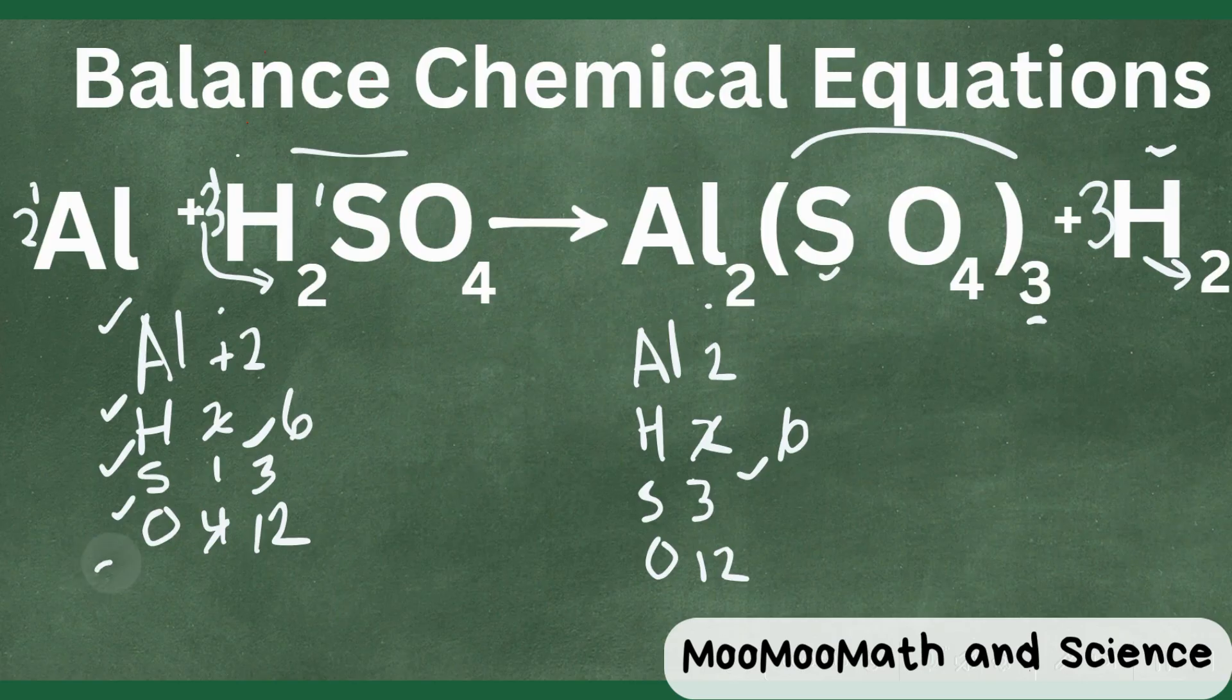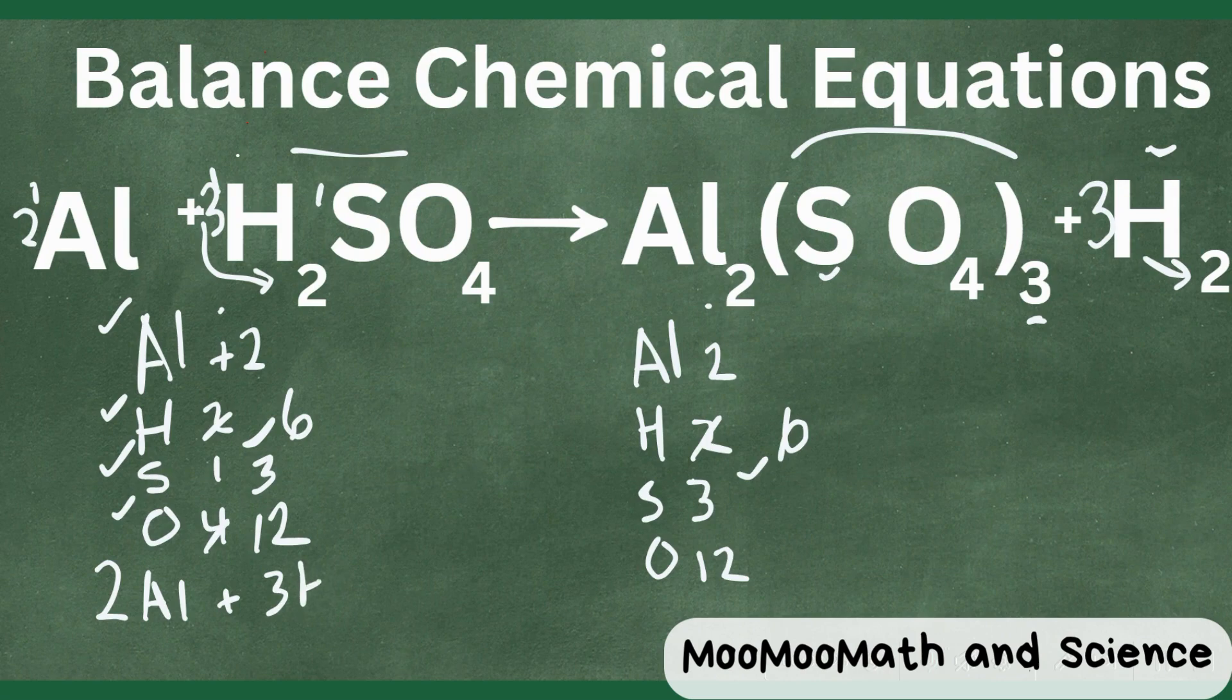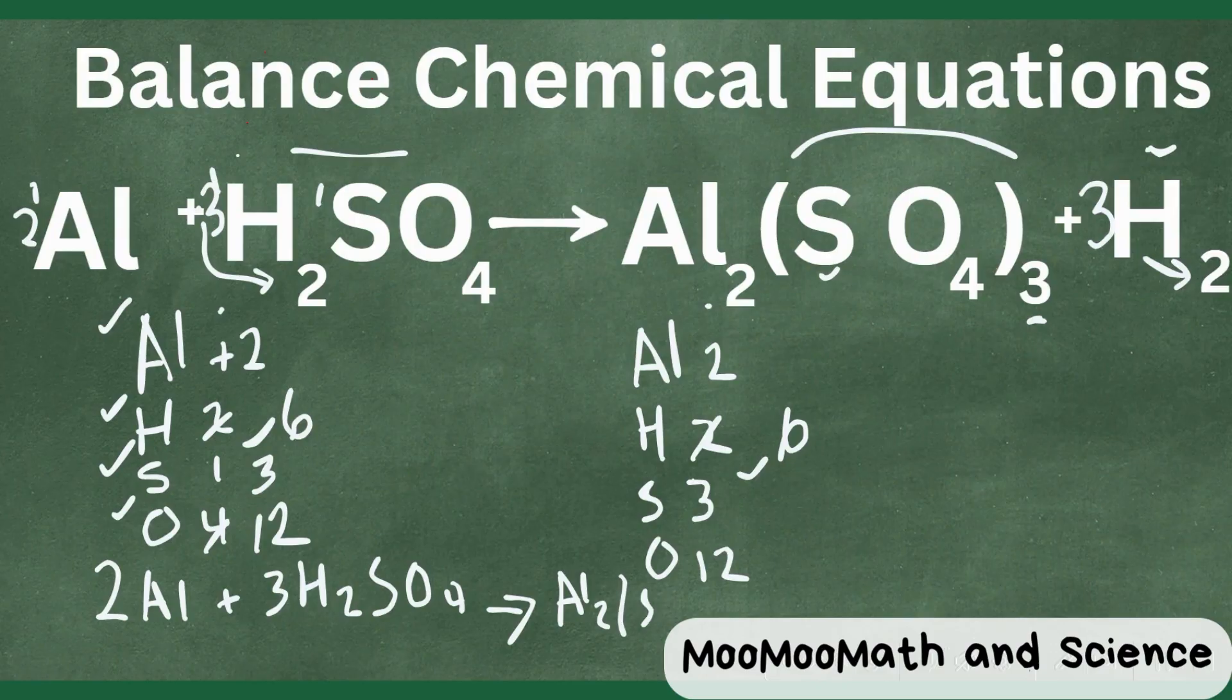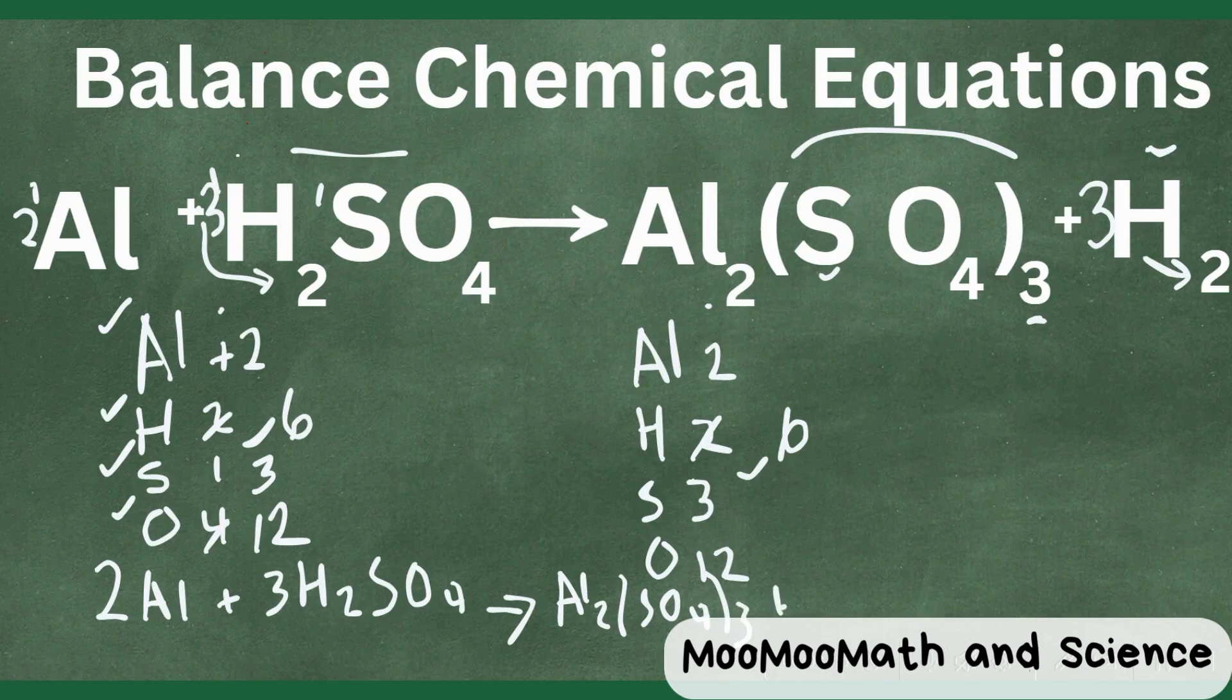So now let's rewrite this. So we have 2Al + 3H2SO4 and that's going to yield Al2(SO4)3 + 3H2. So there we go.